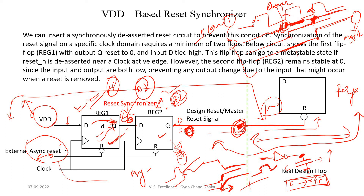So if this reset net is driving so many flip-flops — actually it is driving the reset pins of lots of flip-flops — there will be a heavy loading effect at this particular pin. If there is heavy loading effect, the signal quality is basically degrading. And that will cause more transition time, which will affect the recovery and removal timing checks.